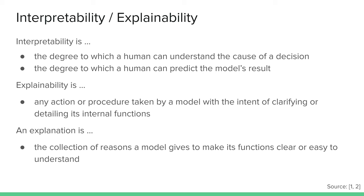In contrast, explainability refers to any action or procedure taken by the model to explain the intrinsic functions and details of its inner workings — it has the intent of clarifying that inner behavior. Unlike interpretability, explainability is an active characteristic: the model is actively trying to clarify and explain its internal behavior to us. An explanation, finally, is the collection of reasons the model can give us to understand why it took a certain path and make its functions clear and easy for humans to understand.